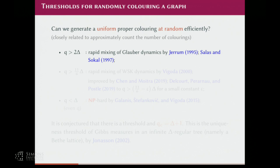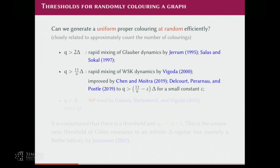They showed that the Glauber dynamics is rapidly mixing when Q is at least 2 delta. Glauber dynamics is one where at every step you randomly pick a vertex and recolor it. This was improved by Vigoda to roughly 11/6 delta — he showed a more complicated dynamics called the Wang-Swendsen-Kotecky dynamics is rapidly mixing. This stood as the best result for almost 20 years, until very recently we got improvements from two groups independently: Chen and Moitra, and also Blanca et al. They improved this to 11/6 minus a very small epsilon, something like 10^{-4}, but the conceptual message is that 11/6 is not a barrier.